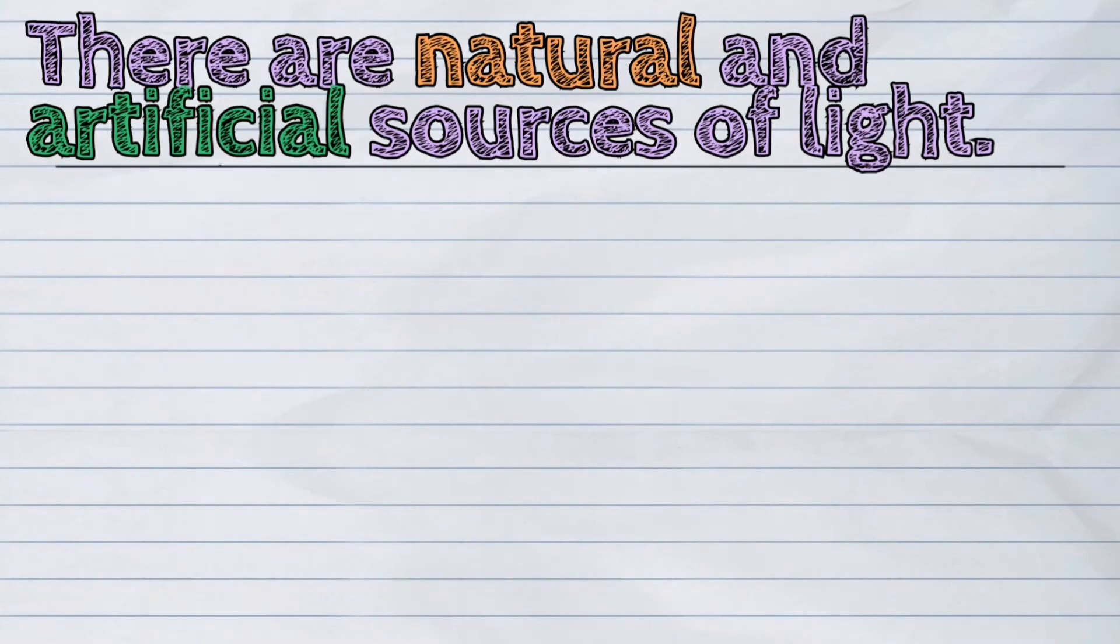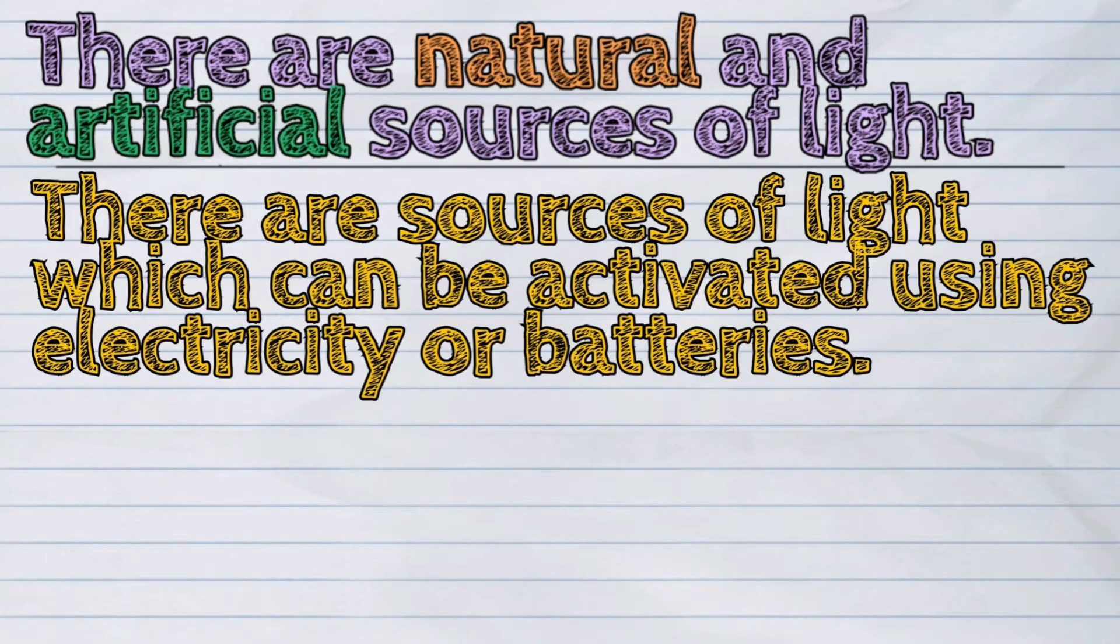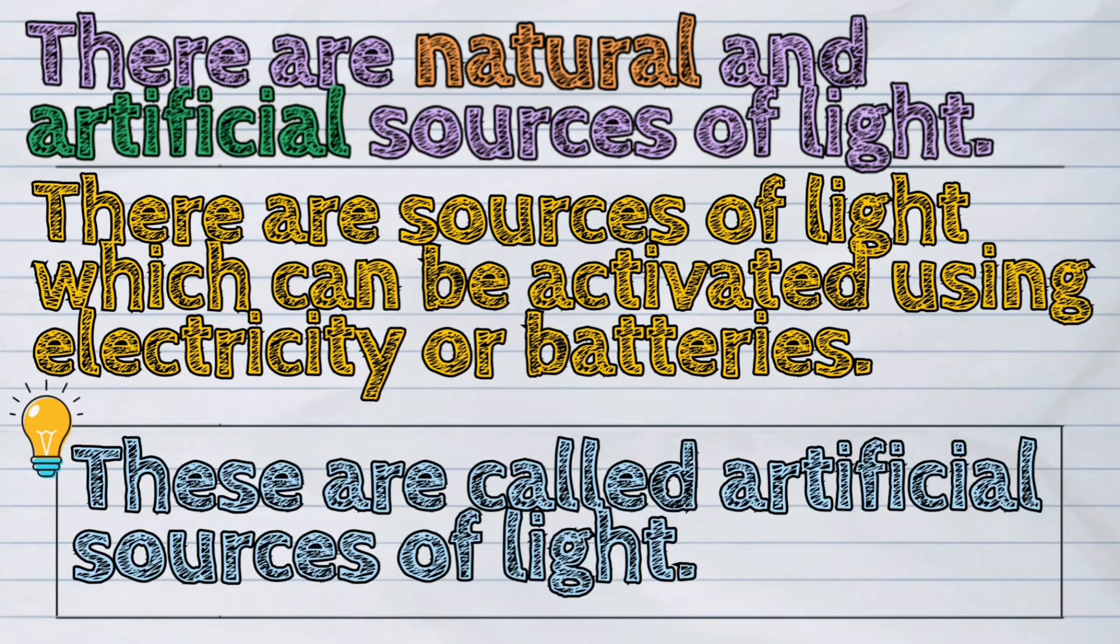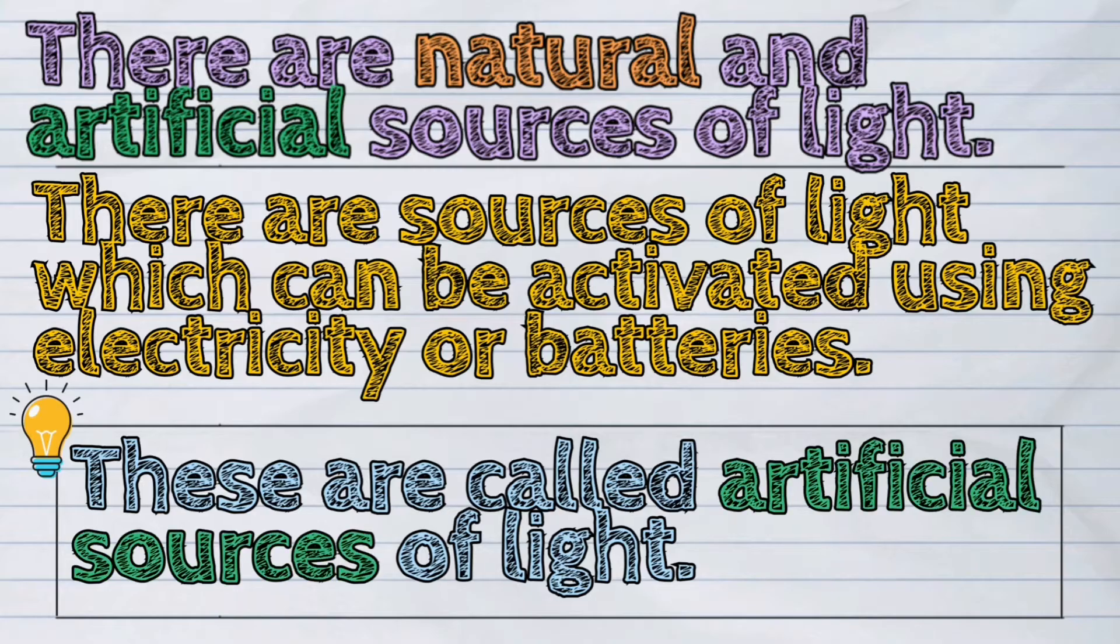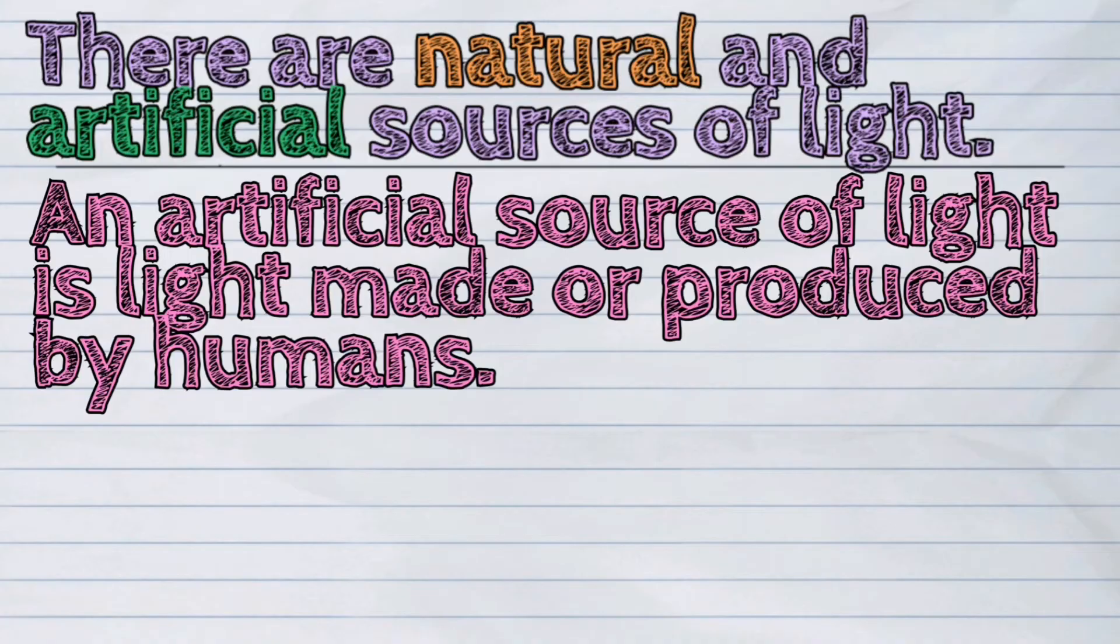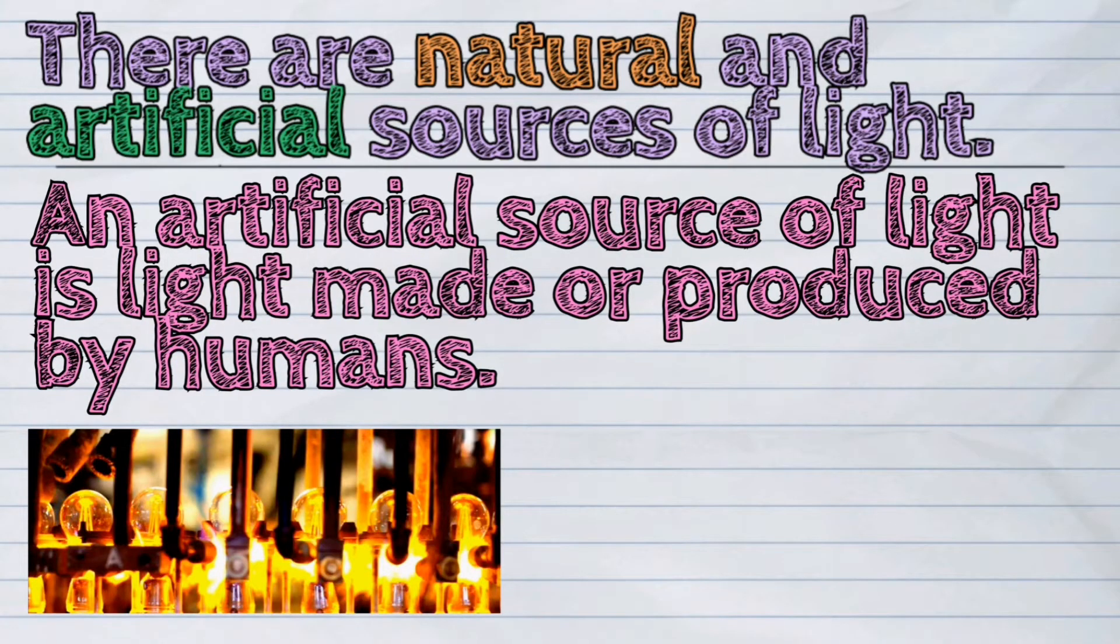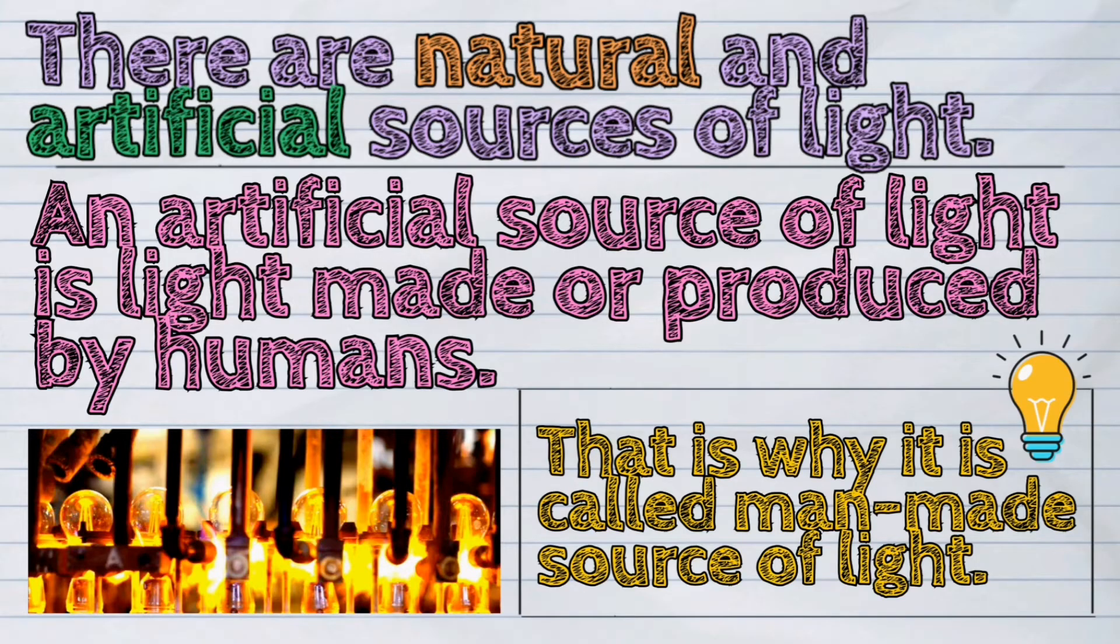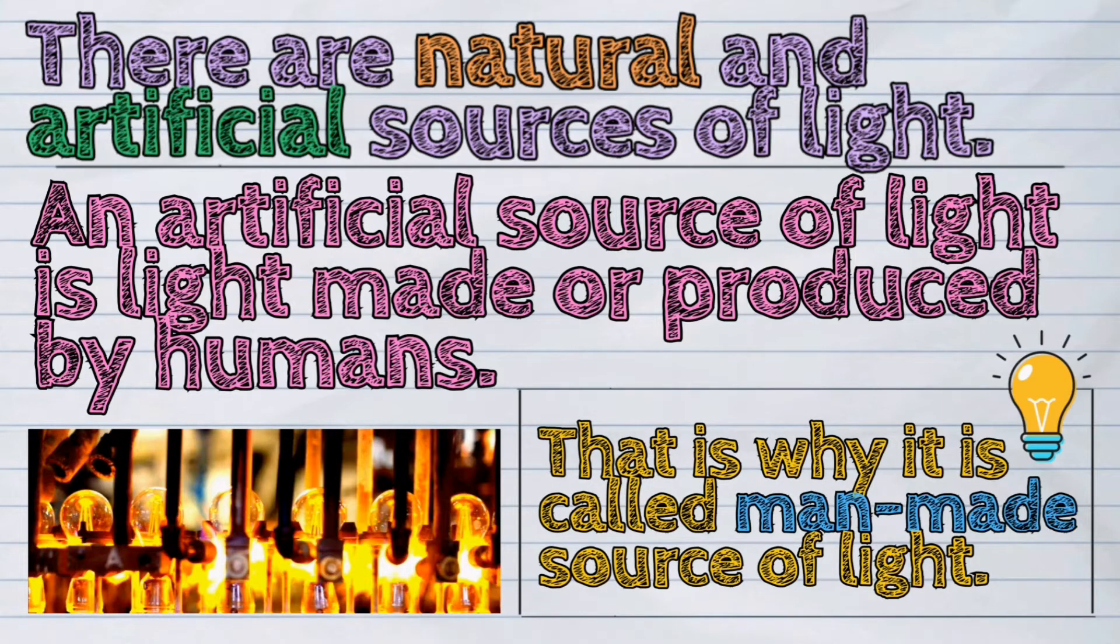Meanwhile, there are sources of light which can be activated using electricity or batteries. These are called artificial sources of light. An artificial source of light is light made or produced by humans. That is why it is called man-made source of light.